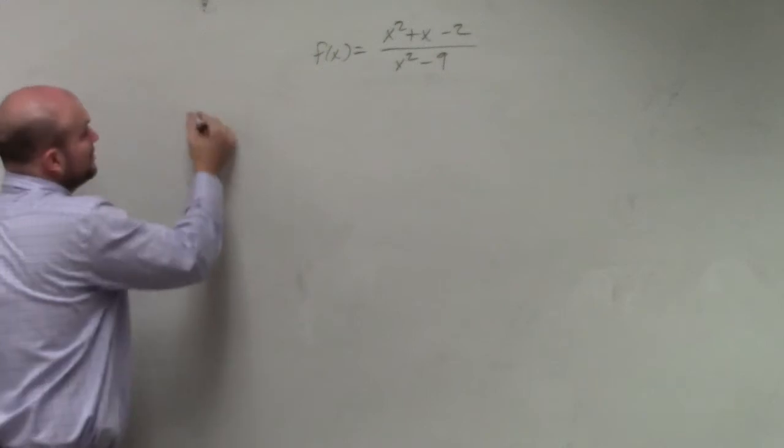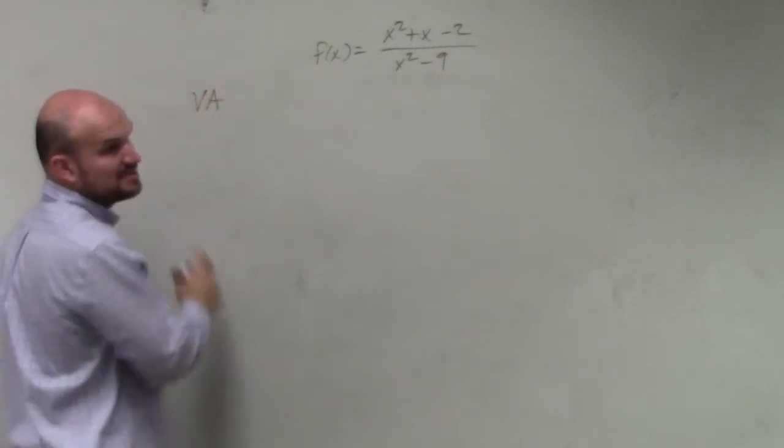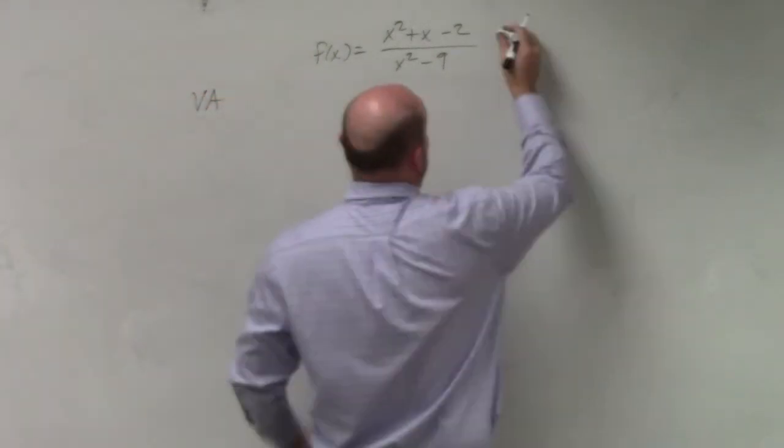Again, let's find the asymptotes. First step, vertical asymptotes. We want to make sure we factor this though, don't we?